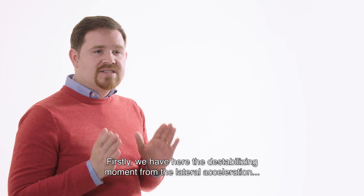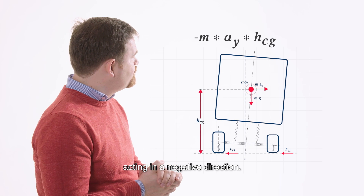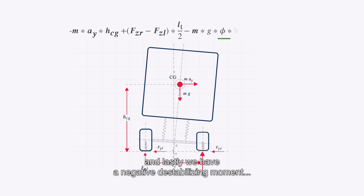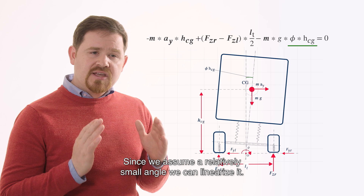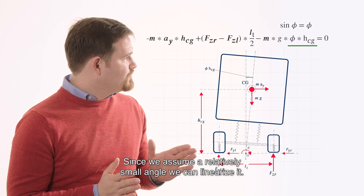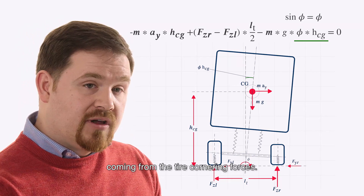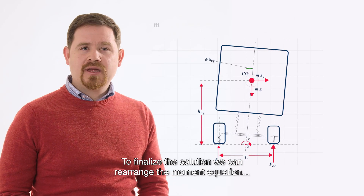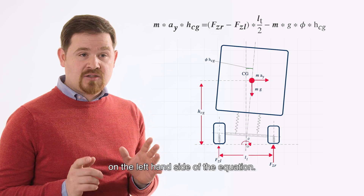First, we have the destabilizing moment from the lateral acceleration acting in the negative direction. Then we have a positive stabilizing moment from load transfer. And lastly, a negative destabilizing moment coming from the lateral displacement. Since we assume a relatively small angle, we can linearize it. Note that we did not include any moment from the tire cornering forces, as the moment arm is equal to zero. To finalize the solution, we rearrange the moment equation, separating the primary destabilizing moment on the left-hand side.